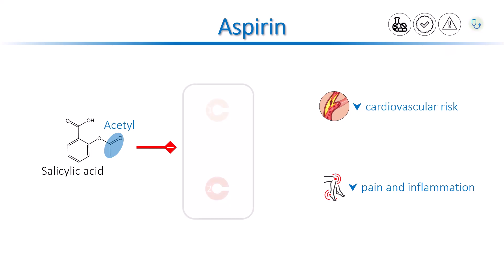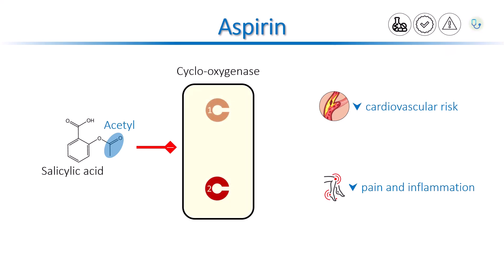Aspirin blocks the enzyme called cyclooxygenase, or COX. There are two types of COX: COX-1 and COX-2. Blocking COX-1 enzyme produces an antiplatelet effect, which decreases the risk of ASCVD, and blocking COX-2 enzyme produces an anti-inflammatory effect.